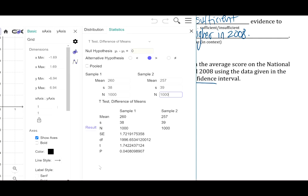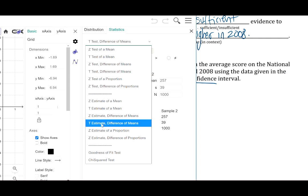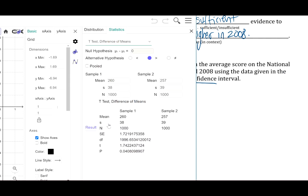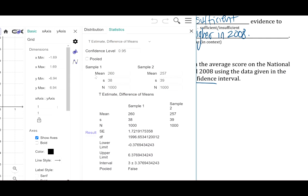In GeoGebra, under statistics, we're still doing a t-test for the difference of means, but now we're doing a t-estimate for the difference of means. And it does roll your data over previously. Our confidence level is a 90% confidence level, and here are our lower and upper limits for that interval.